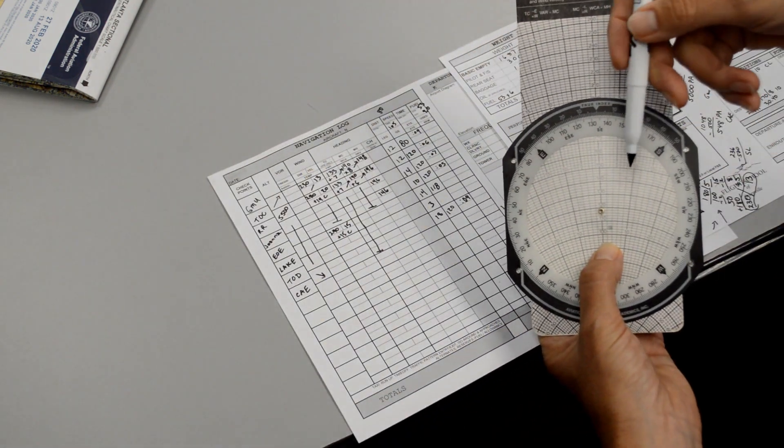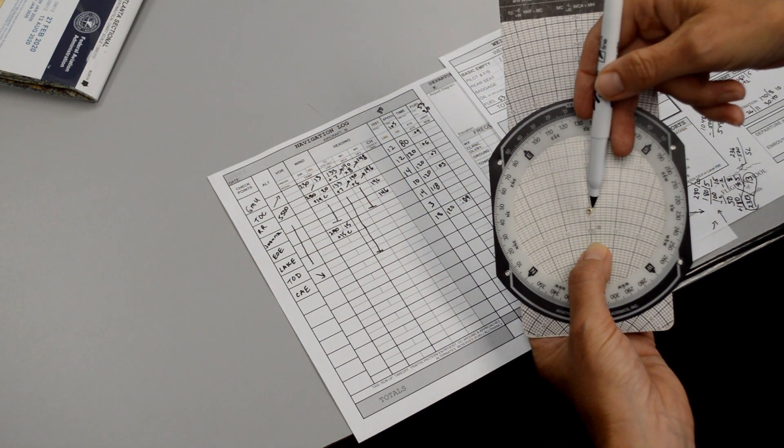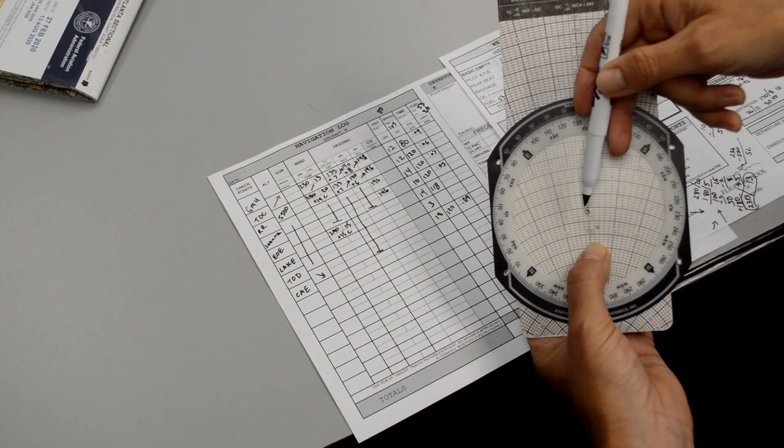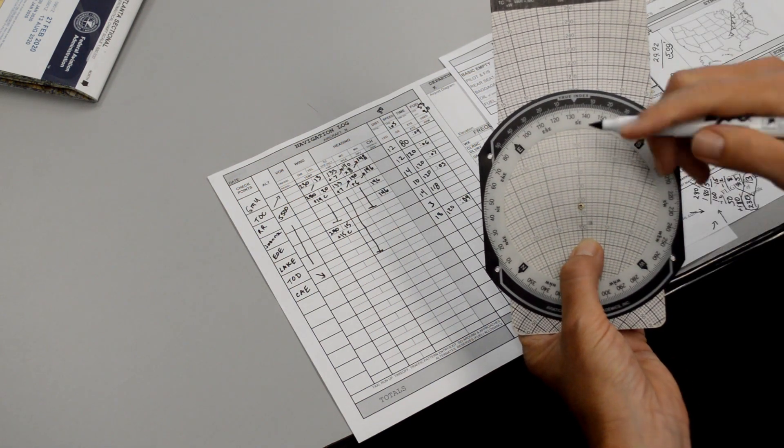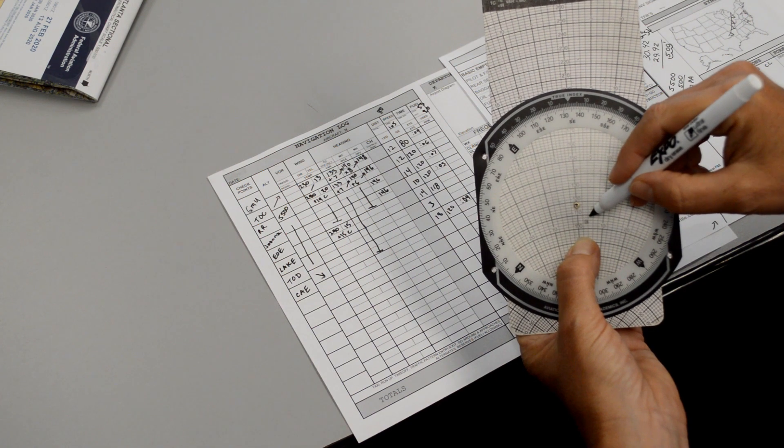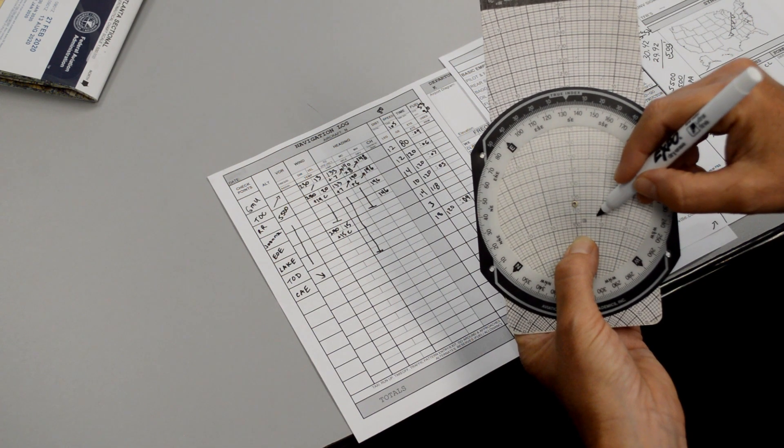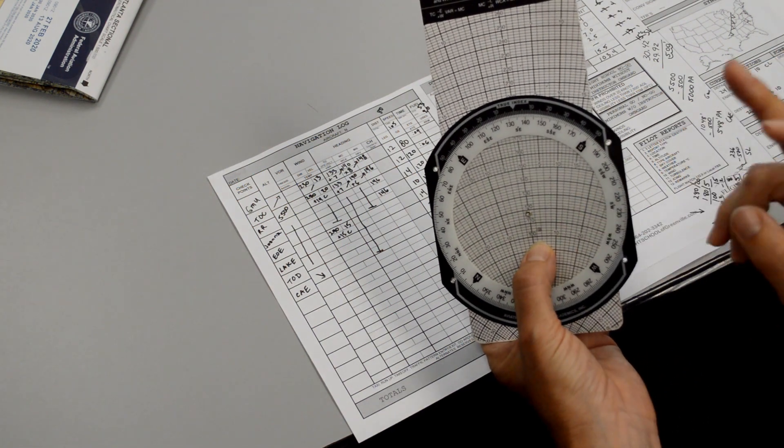And then our wind correction angle reads as number 6 says between the center and right or left. So it looks like it's over to the right by 3 because if this is 10, this represents 2, 4, 6, 8, 10. So therefore it looks like about 3 to the right.